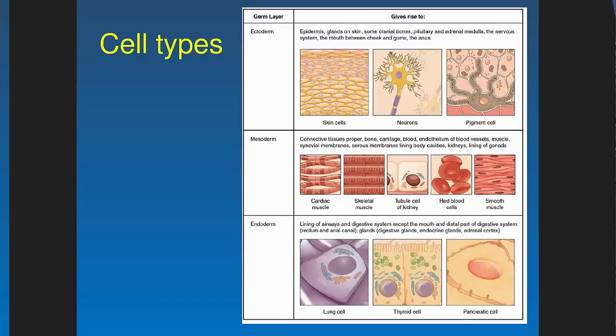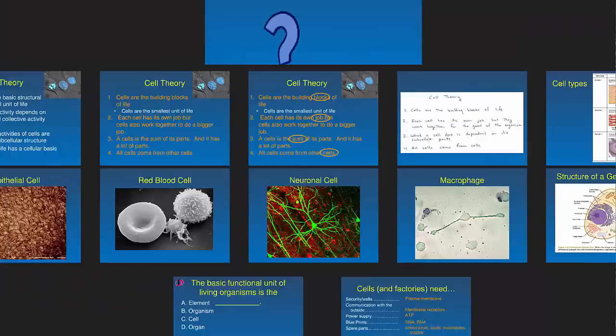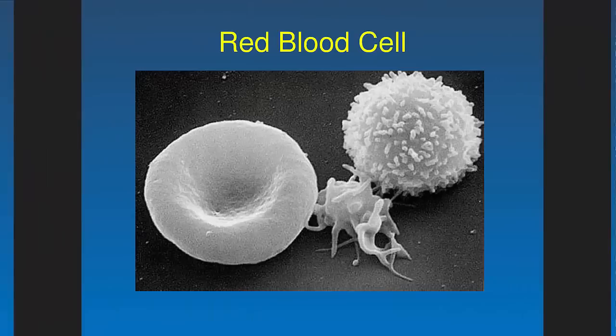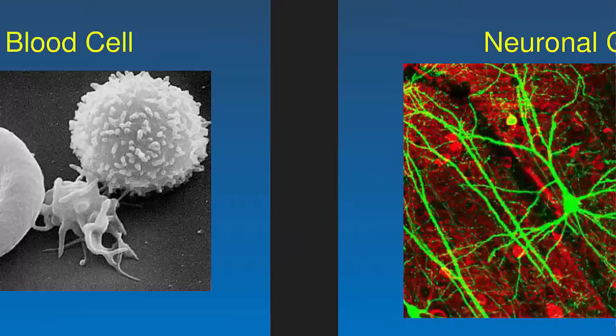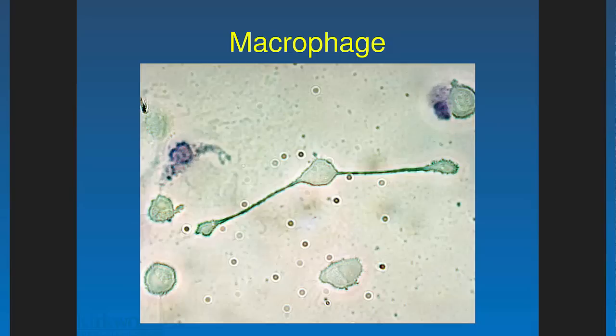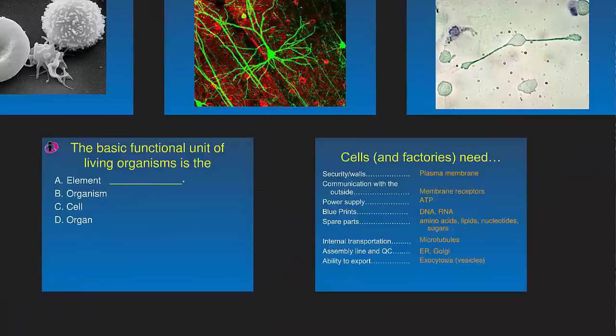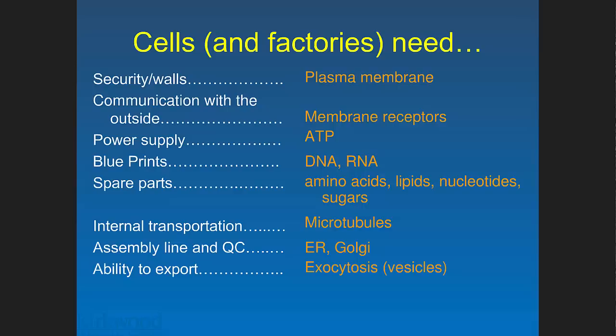Cells come in all kinds of different shapes: skin cells, neurons, melanocytes, and muscle cells vary between skeletal, cardiac, and smooth. Lung cells differ from thyroid and pancreatic cells. Examples include epithelial squamous cells making up skin, red blood cells, T helper cells, neuronal cells that branch out to communicate, and macrophages that extend arms to lasso bacteria and debris. Despite this variety, we generally use a generalized cell structure because all cells share basic parts.